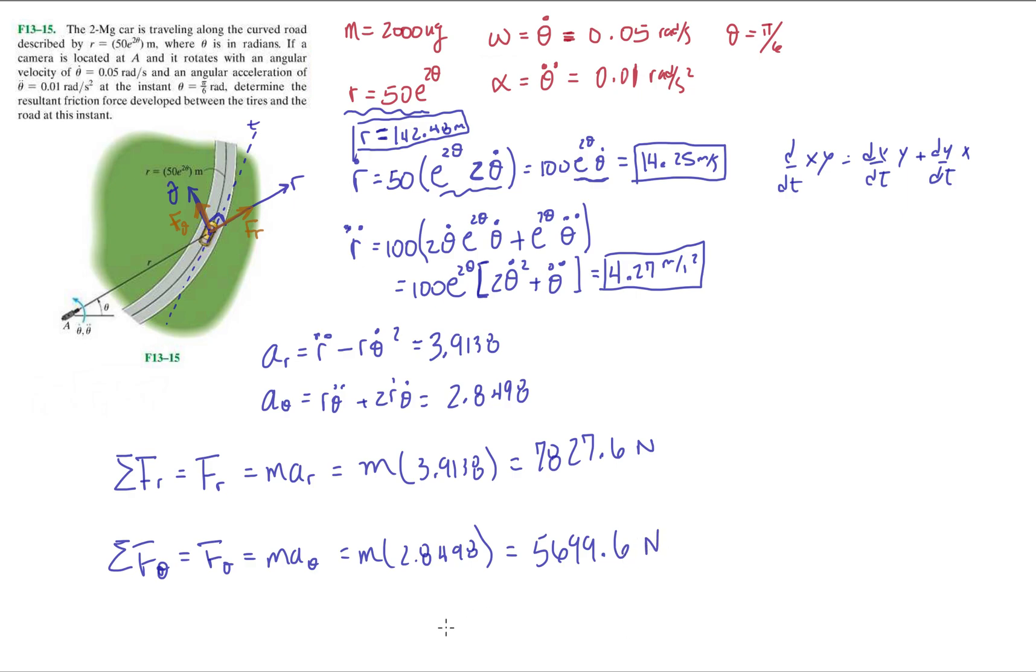Okay, like I said in the beginning, we're taking the magnitude of that. So we're just going to do F, let's call it F sub little f for friction force, resultant friction force, it's going to be 7827.6 squared plus 5699.6 squared. And when we do this we should get 9682.8, so 9,682 newtons, or 9.6, or 9.7 kilonewtons. Okay.